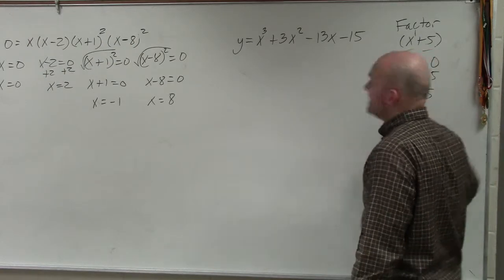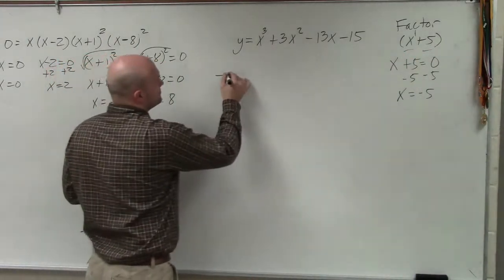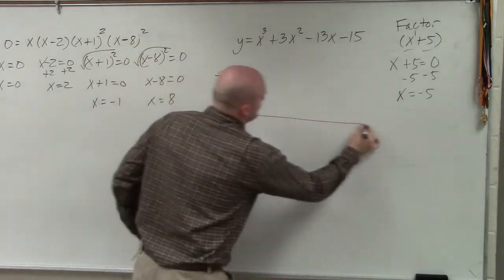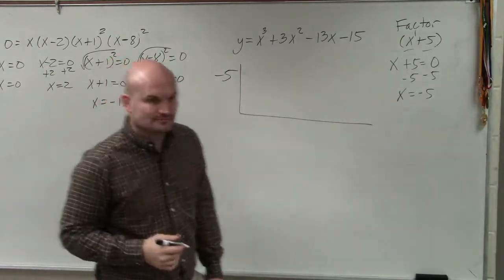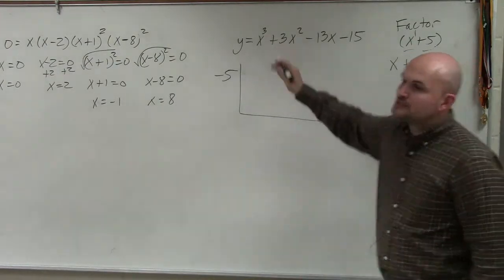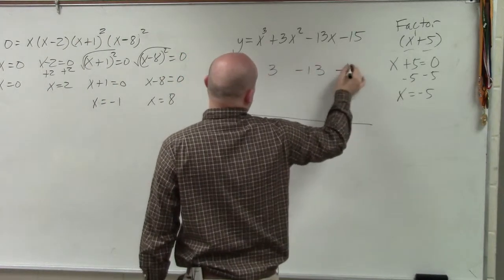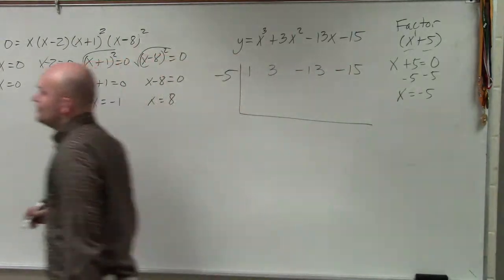So x equals negative 5. That is our 0. Now we take our 0 and we put it outside of this little L. Then what we do is we take the factors of each term and we list them in a row.